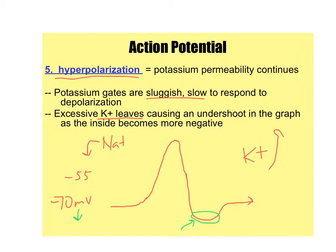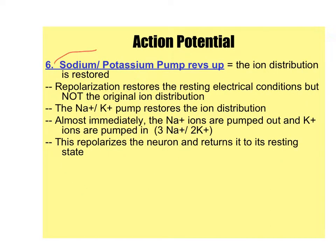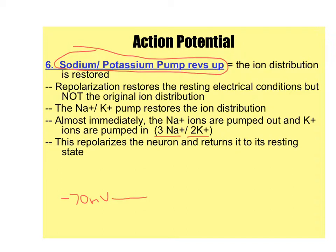Remember the sodium-potassium pumps? Those continuously pump out three sodium ions using energy and pump in two potassium ions. This is what helps establish the resting membrane potential of negative 70 millivolts — the sodium-potassium pump.